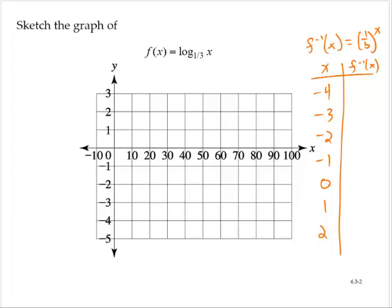Now, if x is 0, one-third to the 0 is 1. One-third to the first power is one-third. One-third to the second power is one-ninth. One-third to the negative first is 3. One-third to the negative second is 9, 27, and 81.